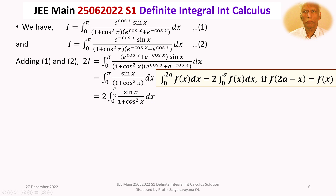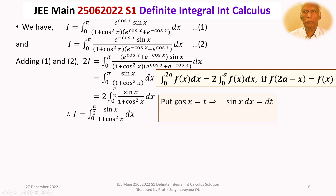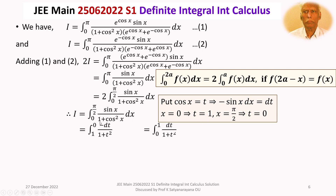Cancelling 2 on both sides, I equals the integral from 0 to π/2 of sin x / (1 + cos²x) dx. To evaluate this, substitute cos x = t, so −sin x dx = dt. When x = 0, t = cos 0 = 1; when x = π/2, t = cos(π/2) = 0. The integral from 0 to π/2 converts to the integral from 1 to 0 of −dt / (1 + t²), which reversing limits gives the integral from 0 to 1 of dt / (1 + t²).